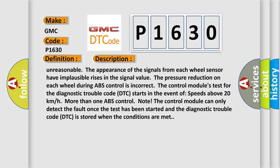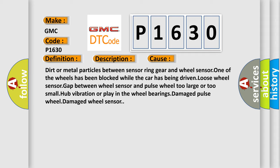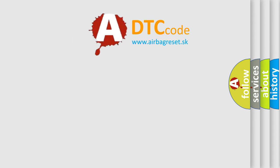This diagnostic error occurs most often in these cases: Dirt or metal particles between sensor ring gear and wheel sensor. One of the wheels has been blocked while the car has being driven. Loose wheel sensor gap between wheel sensor and pulse wheel. Too large or too small hub vibration or play in the wheel bearings. Damaged pulse wheel. Damaged wheel sensor. The airbag reset website aims to provide information in 52 languages.